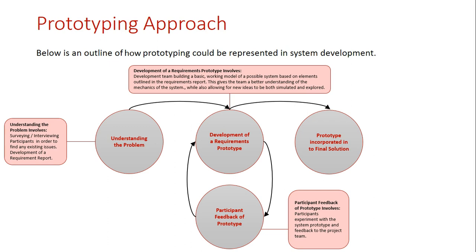We essentially build a model of the system based on the requirements established in a requirements report. This working model is then given to the participants, who test it out, see how the system works, and then give feedback back to the developers. The developers then modify the system based on the feedback and get the participants to test out the system again, conducting that cycle over and over until the participants are happy. They then use these ideas in the final solution and publish the new information system.